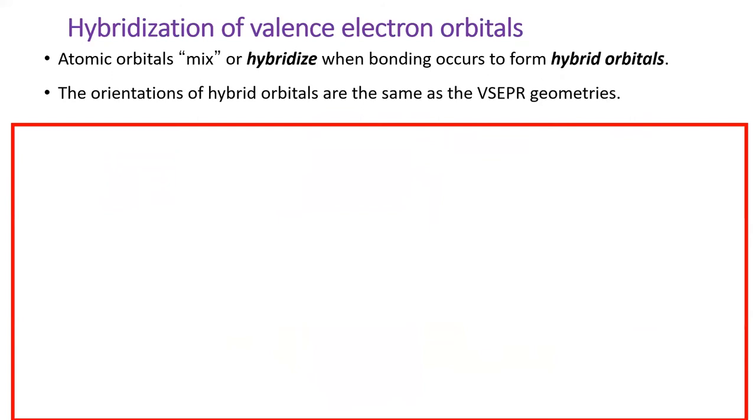Valence electron orbitals usually hybridize in order to form covalent bonds. The hybridization is a mixing of the orbitals and the hybrid orbitals have some of the properties of the orbitals which went in. The spatial orientation of the hybrid orbitals exactly corresponds to the VSEPR molecular geometries.